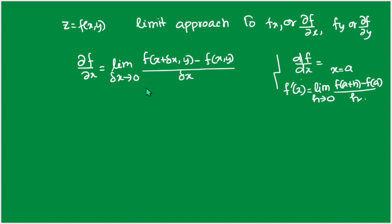So ∂f/∂x = limit as Δx→0 of [f(x + Δx, y) − f(x, y)] / Δx. This is the partial derivative of the function with respect to x. Here, the x component changes by Δx while y remains fixed, because when we partially differentiate with respect to x, y is kept constant.